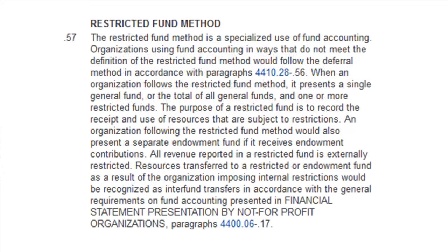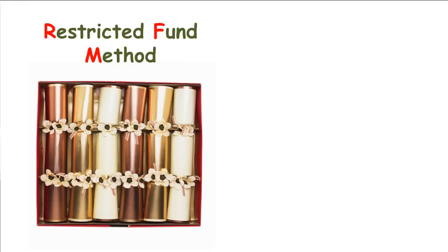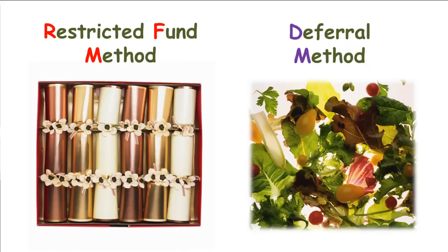The other method is the restricted fund method. This requires setting up a separate fund based on the restrictions associated with each contribution. The general fund handles unrestricted contributions and general administrative expenses of the non-profit. The grant money for our handicapped pet program would be recorded in a separate restricted fund, with revenue recognized in that fund in the year the funds are received. In the subsequent year, all costs of delivering the program are charged against this restricted fund. The advantage is transparency of restricted funds received and dispersed; the disadvantage is the complexity created by having multiple funds within the same organization.